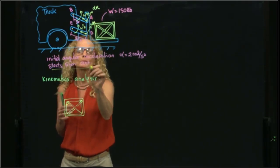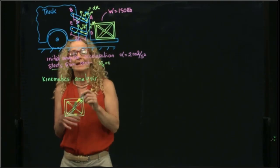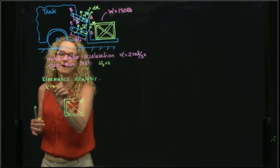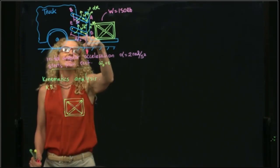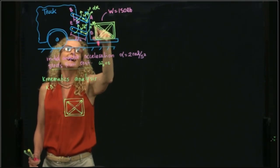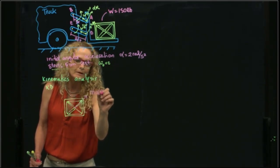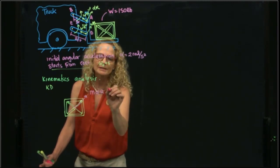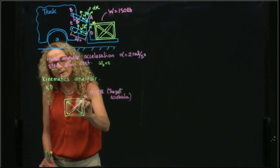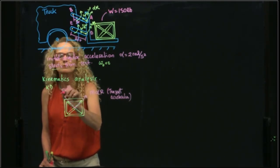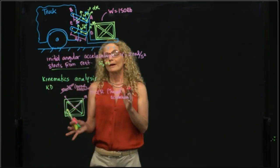However, it starts from rest. It means that the initial angular velocity is equal to zero. So this one over here is equal to zero. Therefore, if we do our kinetic diagram, we will have a, let me draw it with a different color, so this here will have this, it moves in a circular path, and this crate moves with that platform. Therefore, we will have mass times angular acceleration times R, which is the tangent acceleration. And then we have a normal acceleration, which is equal to zero. Okay, so that was our kinematic analysis.